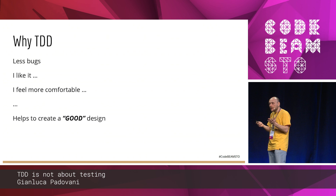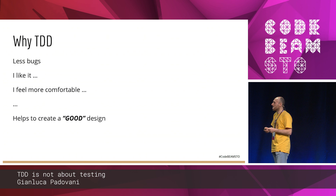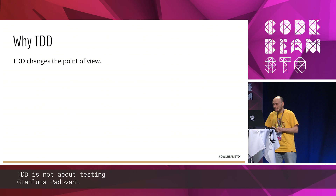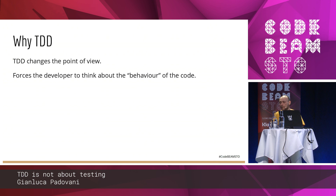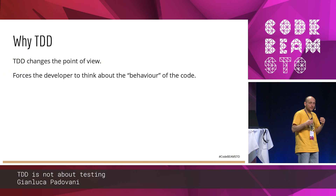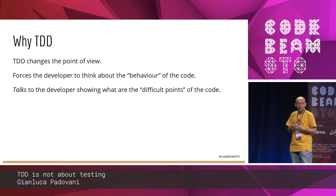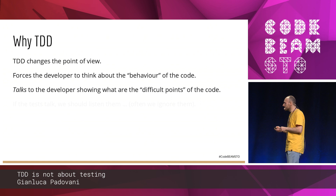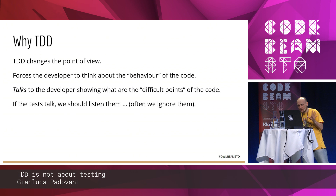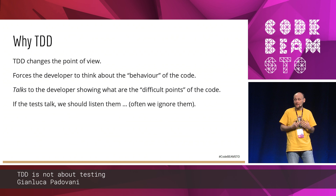TDD changed the point of view, because it forces the developer to think about the behavior of your code. You are watching your production code when you write the TDD — when you write the test. The test talks to the developer, showing what are the difficult points of your code. This is a very important point, because the test talks — sometimes screams, screams in pain — and we should be able to listen to it.